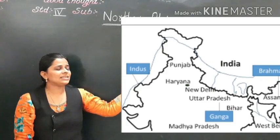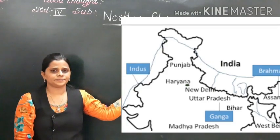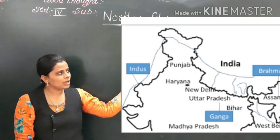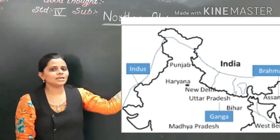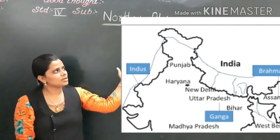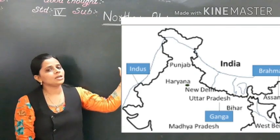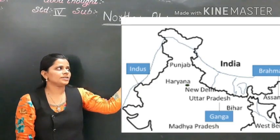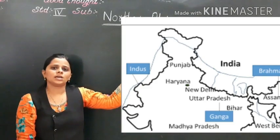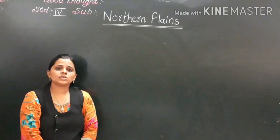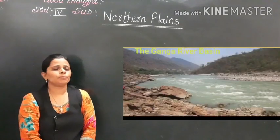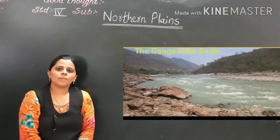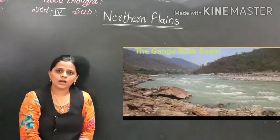As you see in the map, the Ganga is in the centre, Indus is in the west, and Brahmaputra is in the east. Now we will talk about the river Ganga.